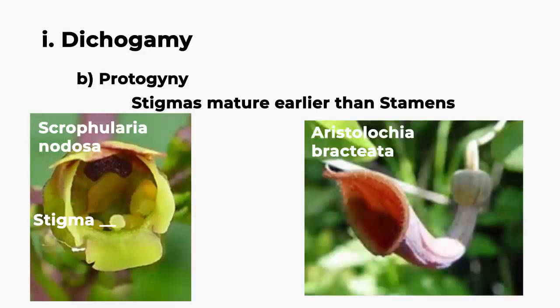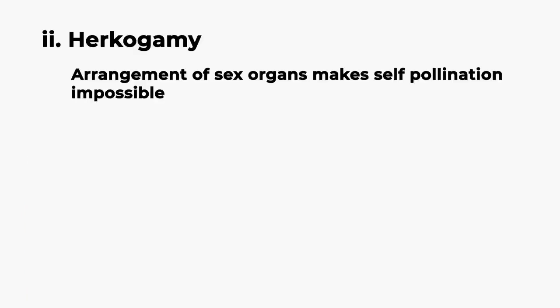The second adaptation in bisexuality is herkogamy. Here, the arrangement of sex organs makes self-pollination impossible.